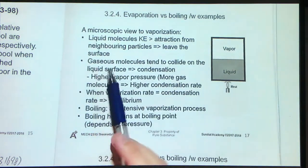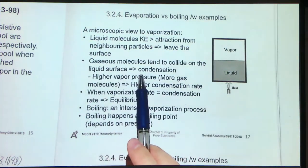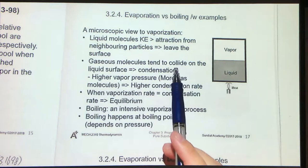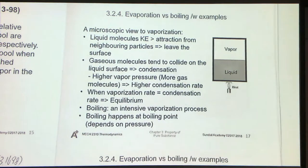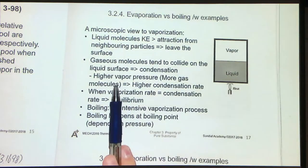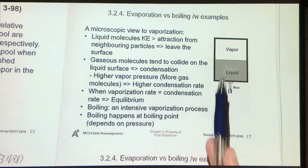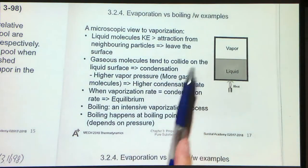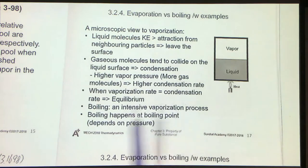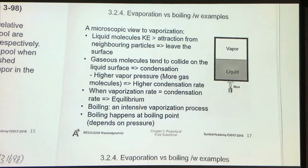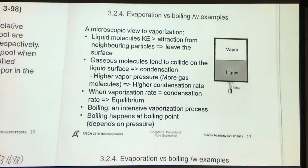Also, gaseous molecules will have similar collisions, and if they have sufficient KE, they can go back to the liquid surface, giving us condensation. If the vapor pressure is higher, there are more gas molecules in the vapor, which results in a higher condensation rate. When the vaporization rate equals the condensation rate, there is no net mass transfer between the two phases, and they will be in equilibrium.